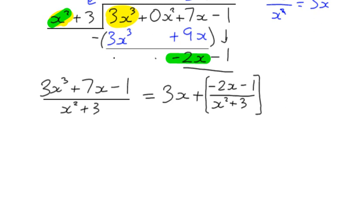So that's fine, I can leave it like that. If you weren't going on to leave it as partial fractions, then I would simplify that, because we know that we've got a common factor of negative 1 in that expression there.